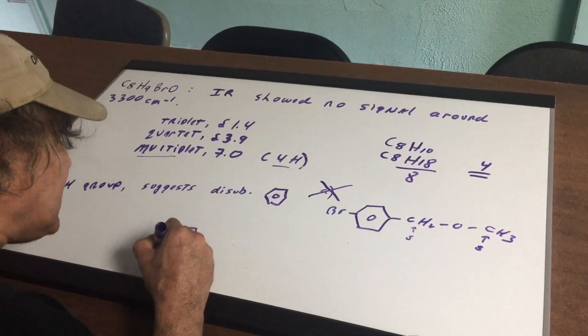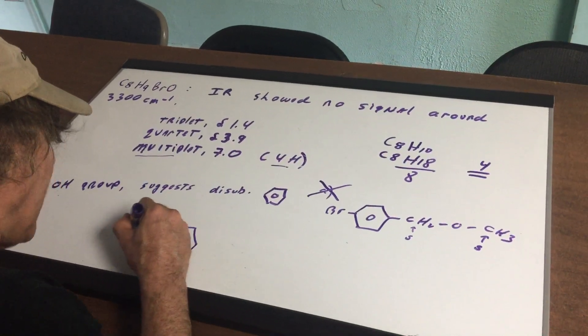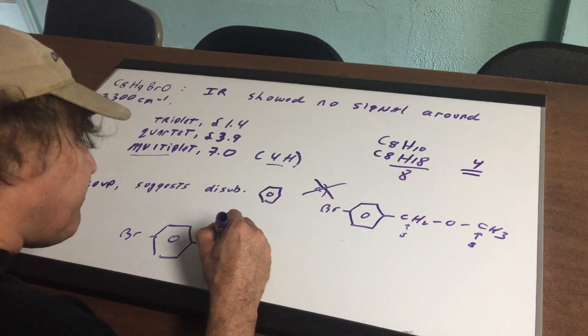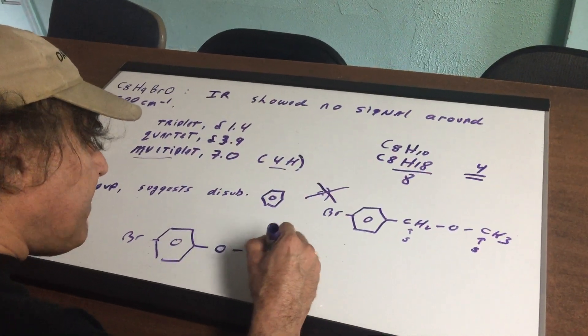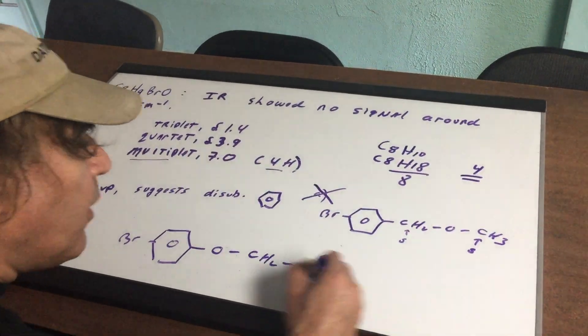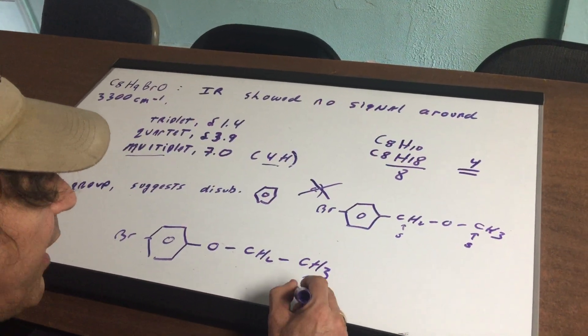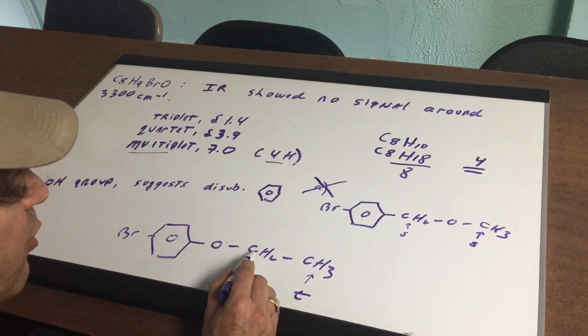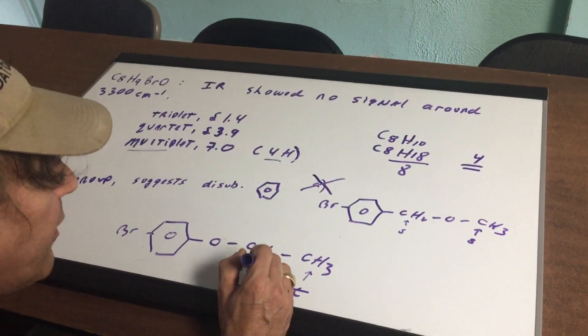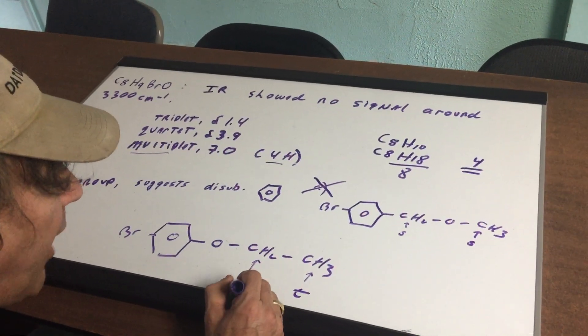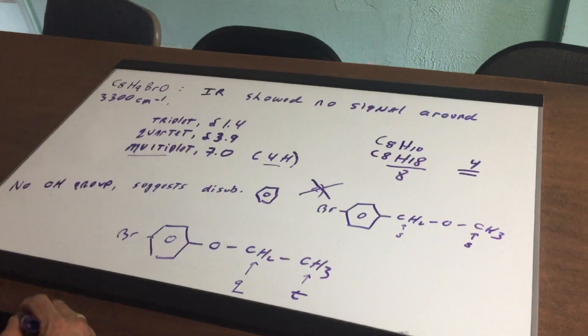Let's go to another choice. Let's say we had a choice that looked like this. Now what I would simply do is I would look here and I would see that this signal would be a triplet. It's a triplet because it's next to a carbon with two and then this signal would be a quartet, which is next to a carbon with three H's.